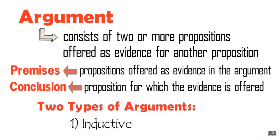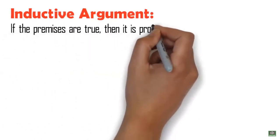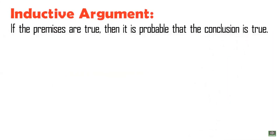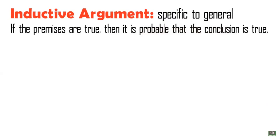Arguments can either be inductive or deductive. An inductive argument is one in which it is claimed that if the premises are true, then it is probable that the conclusion is true. Even if all the premises are true, inductive reasoning allows the conclusion to be false. It is also important to note that inductive arguments go from the specific or particular to the general — they make broad generalizations from specific observations.